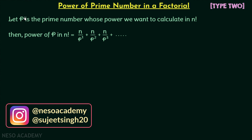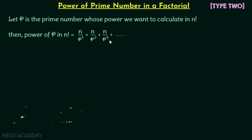The highest power of p in n factorial is equal to n over p¹ plus n over p² plus n over p³ and so on. Using this formula we can find the highest power of prime number p in n factorial.